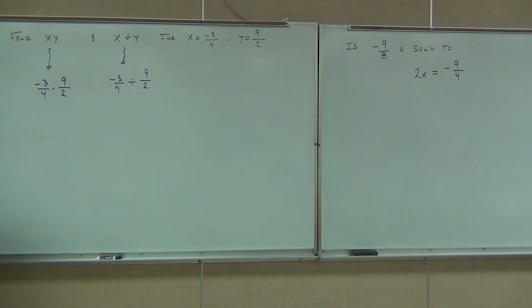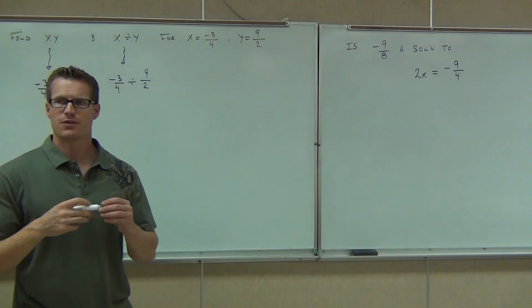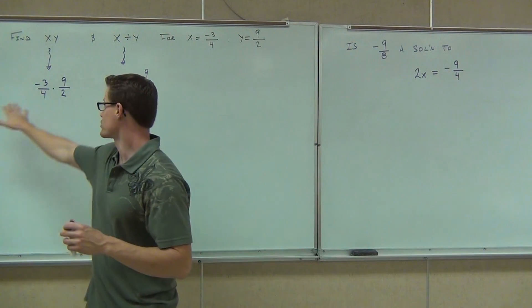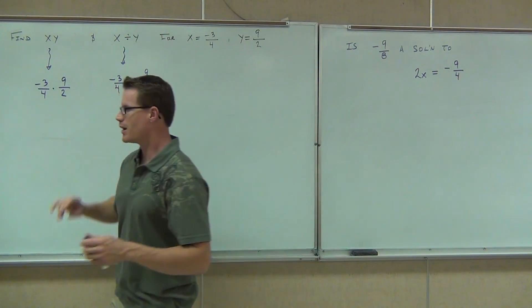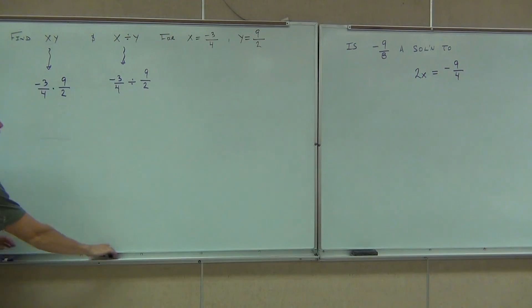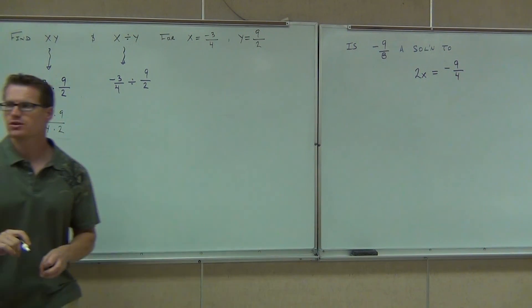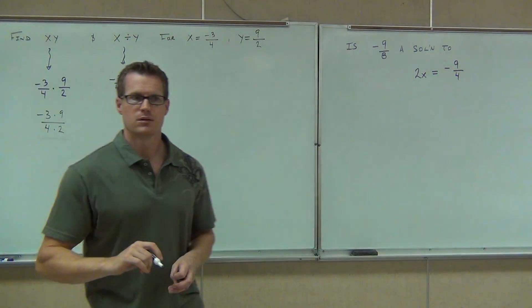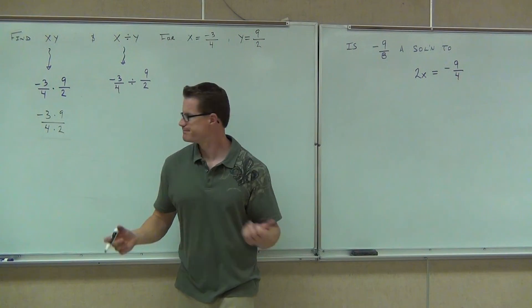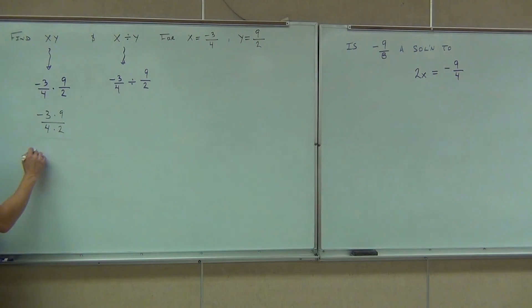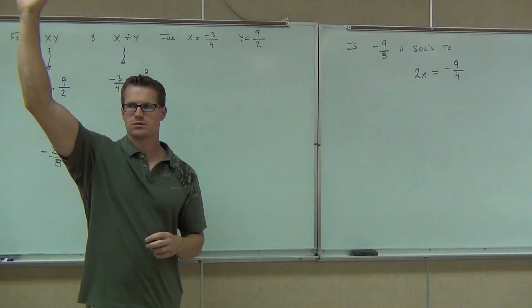Okay, so the first one. Ladies and gentlemen, do we need to flip anything or reciprocate anything on the first fractions here? First problem. No, it's multiplication. Don't change any of that stuff. All we're going to do is extend our line or rewrite the fraction as I'm about to do. We'll look for anything to cross out. Is there anything to cross out there? Any common factors that you see? No. So we're going to get negative 27 over 8. Raise your hand if you've got negative 27 over 8. Cool. All right.